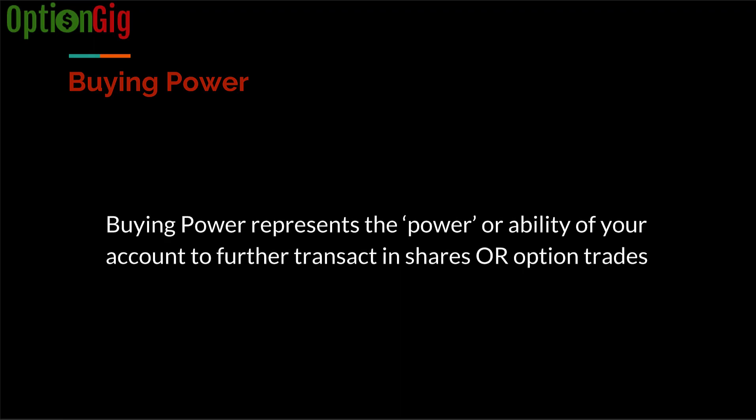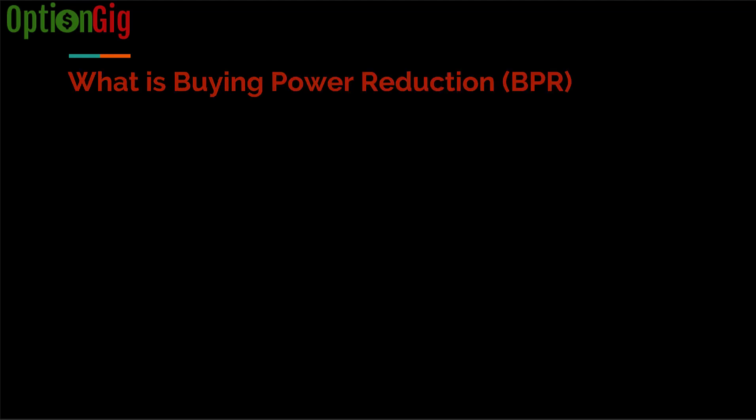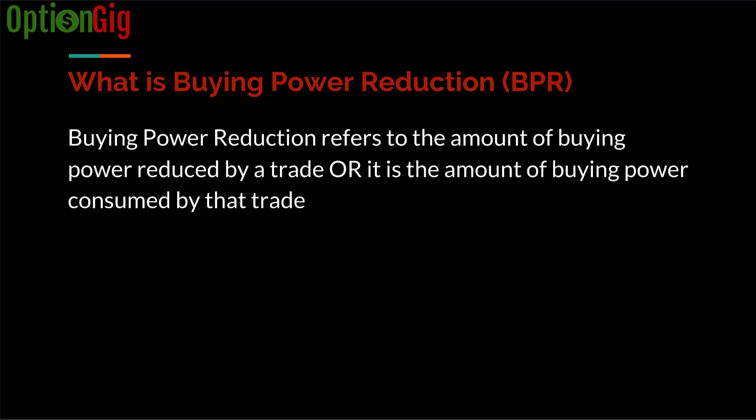Buying power represents the power or ability of your account to further transact in shares or option trades. For example, if you have $50,000 in your account and you have not bought any shares or had any option trades, the current buying power of your account is $50,000. For simplicity I am not considering a margin account, but just a cash account. Buying power reduction means how much buying power has been reduced by the trade that you just did — i.e., this is the amount of buying power consumed by a particular trade.